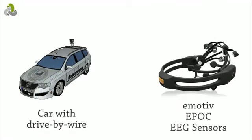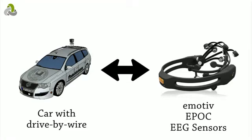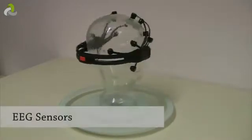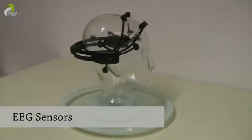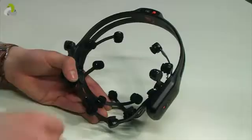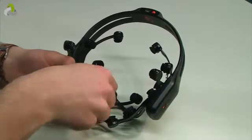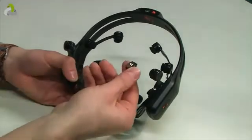On the left is our car. On the right you can see the EEG sensors used for measuring brain activity. The human brain produces electromagnetic signals, and they can be measured using a special cap with 16 sensors.